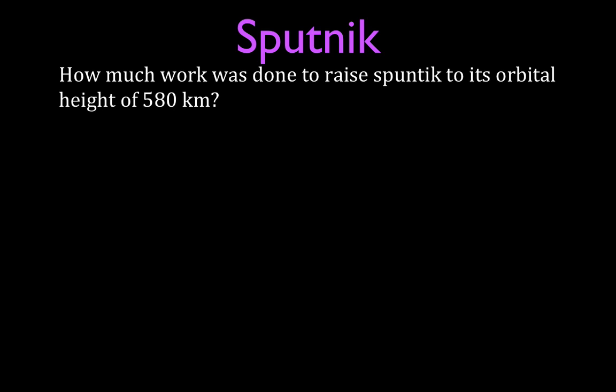We're going to be calculating the amount of work, and the amount of work is equal to the change in potential energy. Sputnik had some energy when it was at the surface of the Earth, and when we raise it up it has some other potential energy. We're going to calculate those two and then find the change. We have to be really careful — it's not just the difference; we have negative signs and minus signs, and it's always final potential energy minus initial.